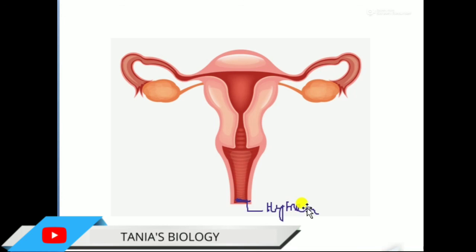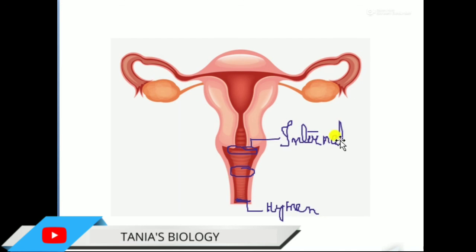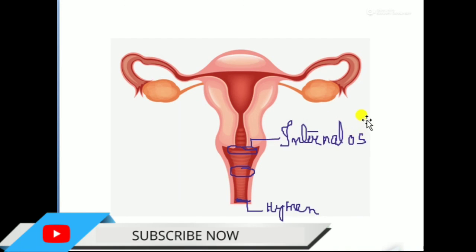In the cervix region there are two openings. The upper opening is known as the internal os — os meaning orifice — and the lower opening is known as the external os or external orifice.